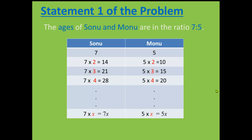This means that if Sonu is 7 years old, Monu will be 5 years old. And if we multiply the ratio with a factor of 2, we get 7 times 2, 14. That means if Sonu is 14 years old, Monu will be 10 years old. If we multiply the ratio with a factor of 3, we get that if Sonu is 21 years old, Monu will be 15. If we multiply the ratio with 4, we get that if Sonu is 28 years old, Monu will be 20 years old. But we are uncertain because we only know that the ratio of their ages is 7 is to 5. We are uncertain about their exact ages.